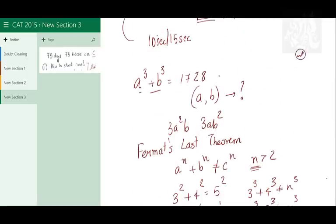So coming back to the question, if a cube plus b cube is another cube, it's not possible. So the answer is the number of pairs they can assume is zero. Again, if you know the concept, it's a 10 seconder.